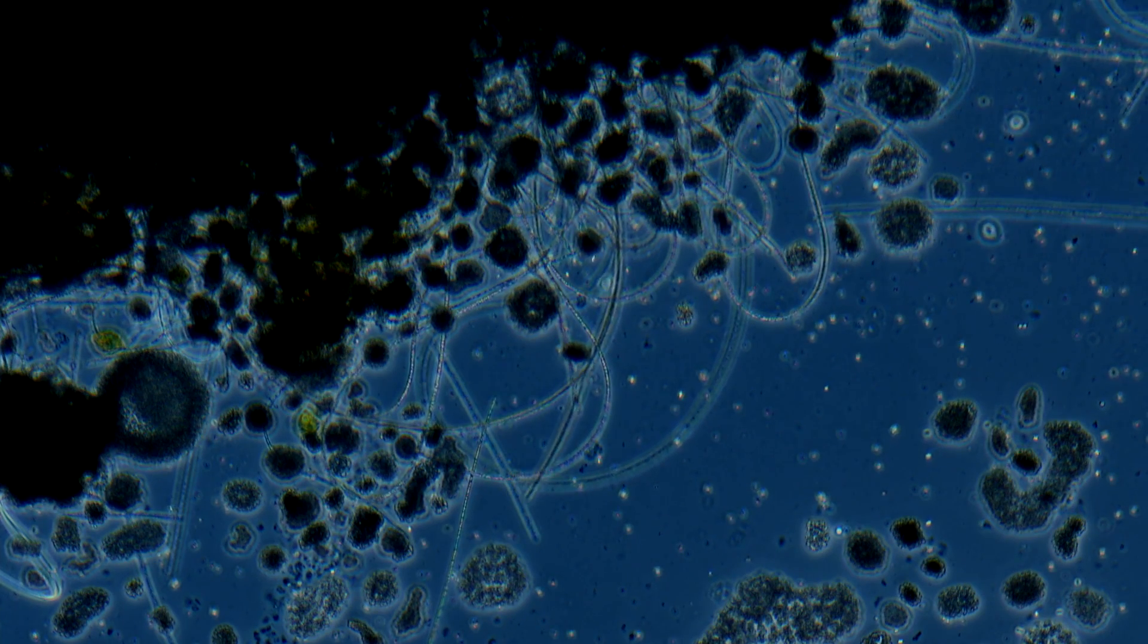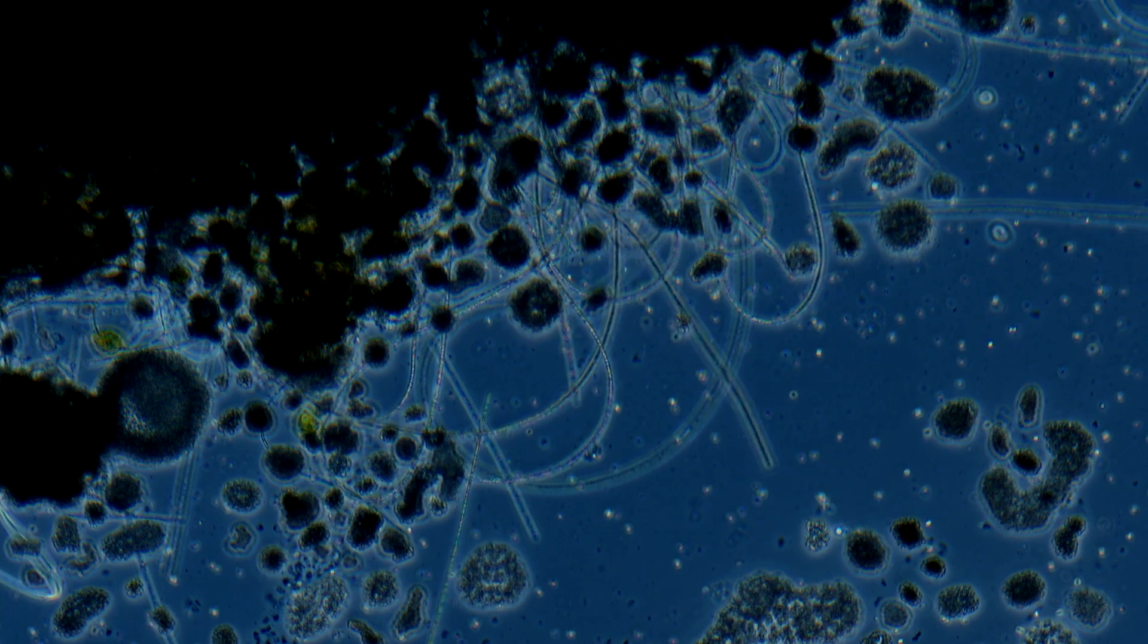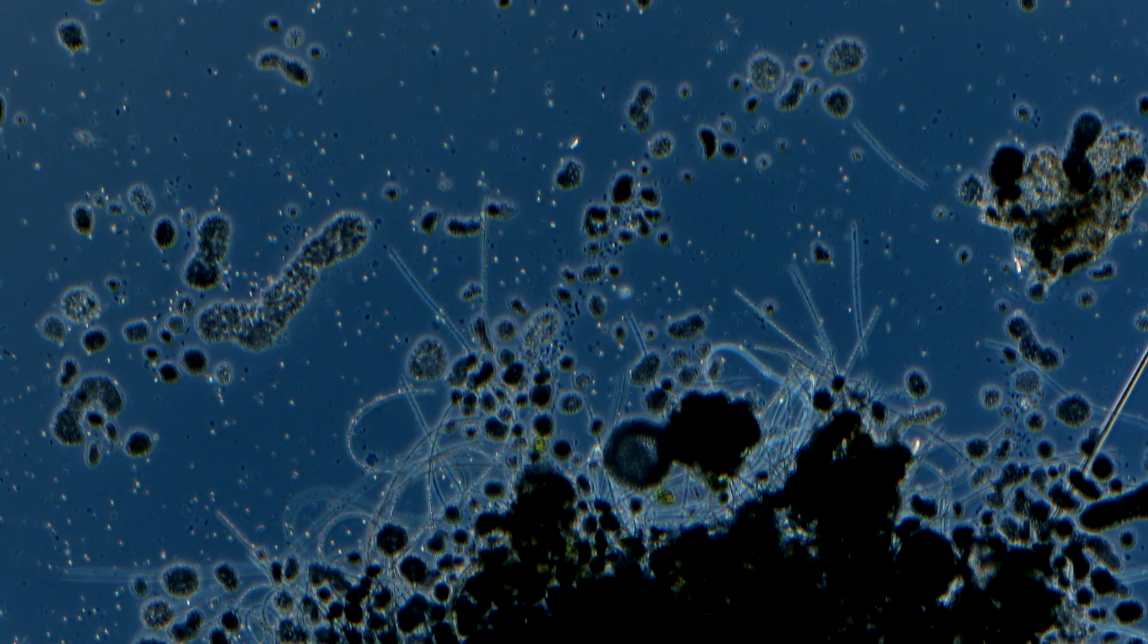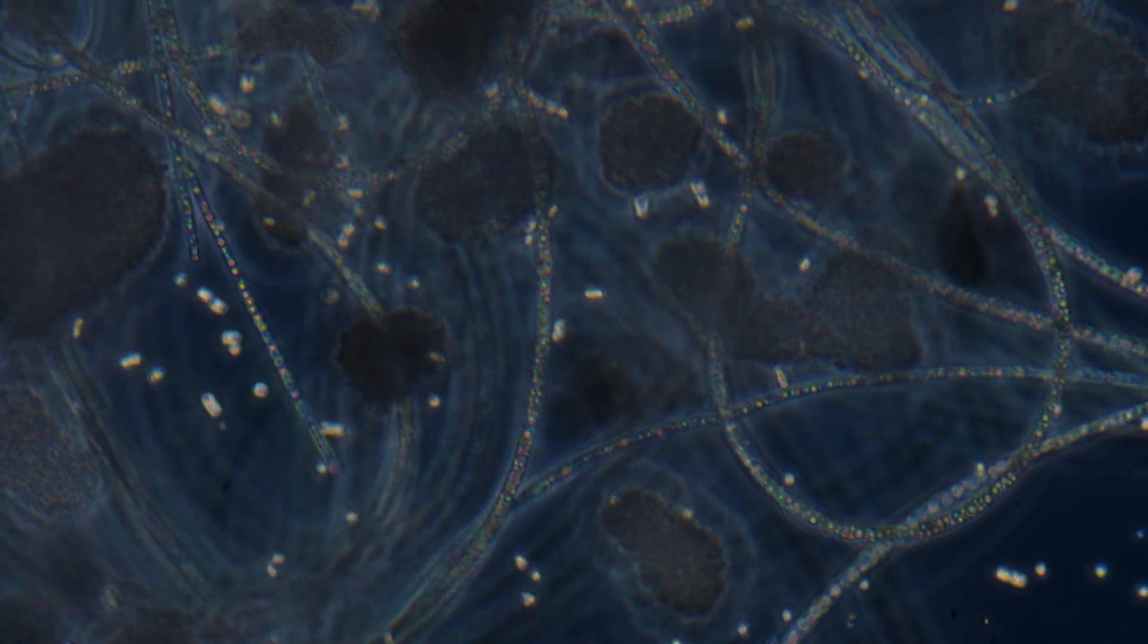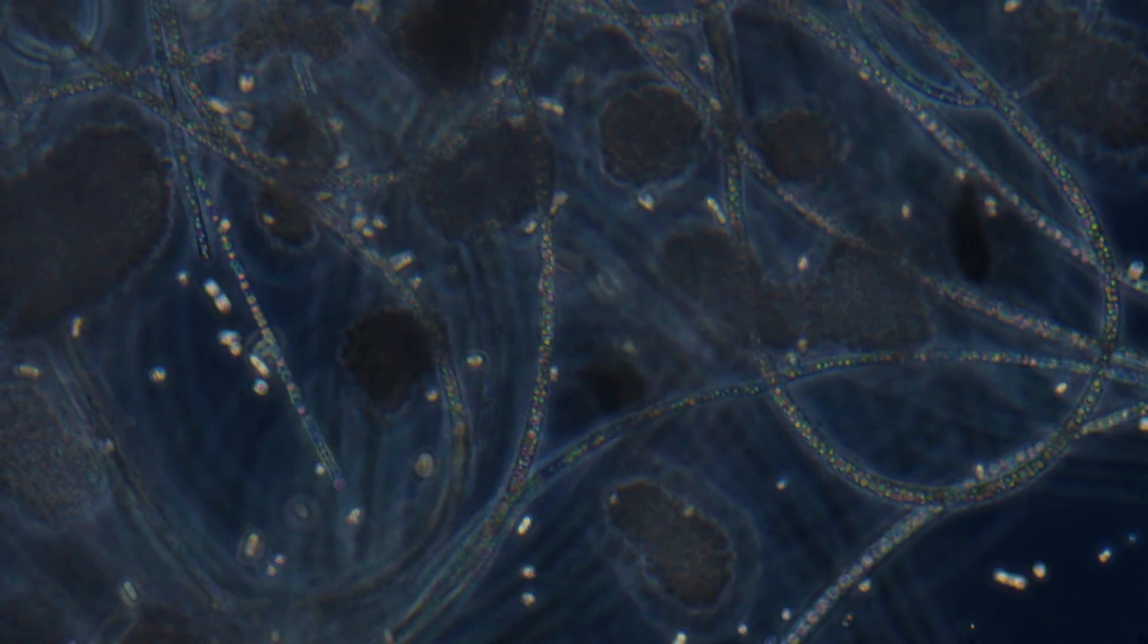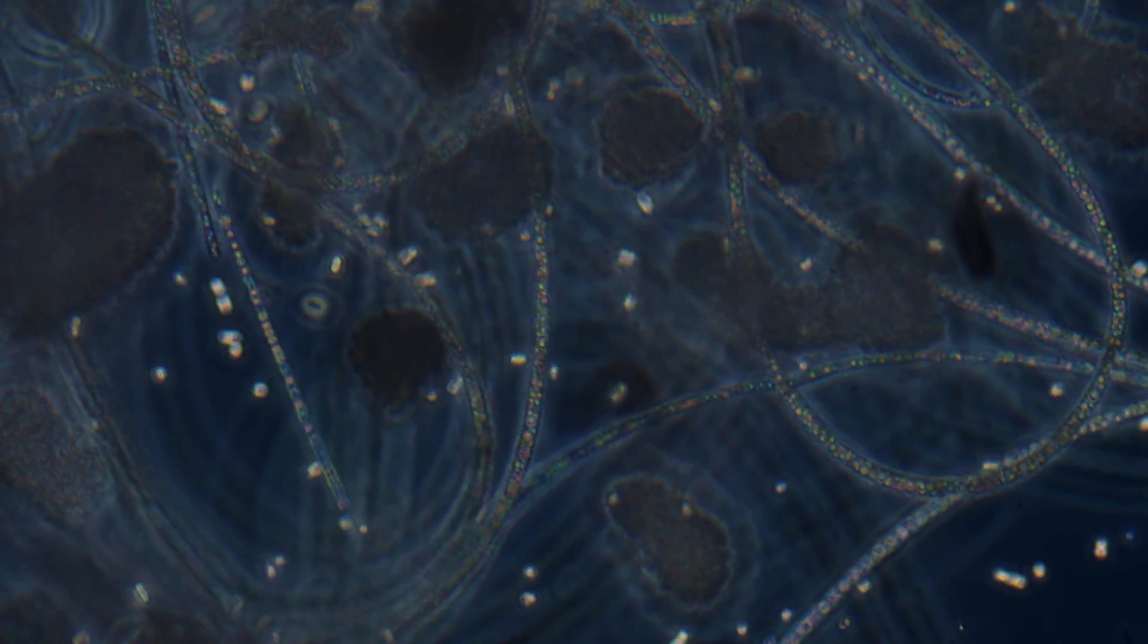The cyanobacterium helped the larger microbe by providing it with nutrients from photosynthesis, and the larger organism, we're not positive what it was, aided the cyanobacterium too, possibly by protecting it and ferrying it around.